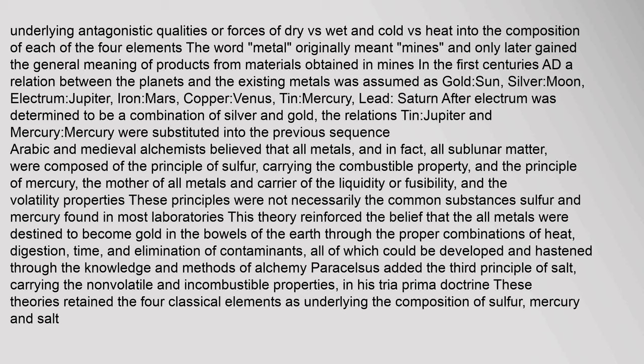In the first centuries AD, a relation between the planets and existing metals was assumed: gold (Sun), silver (Moon), electrum (Jupiter), iron (Mars), copper (Venus), tin (Mercury), lead (Saturn). After electrum was determined to be a combination of silver and gold, the relations tin/Jupiter and mercury/Mercury were substituted into the sequence. Arabic and medieval alchemists believed that all metals, and in fact all sublunar matter, were composed of the principle of sulfur — carrying the combustible property — and the principle of mercury — the mother of all metals and carrier of liquidity, fusibility, and volatility.